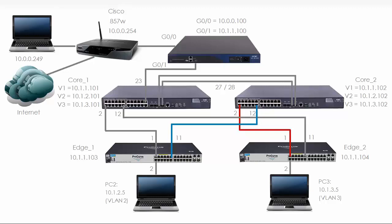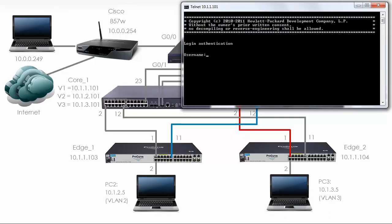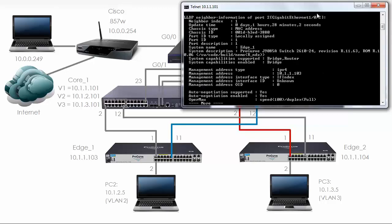Let's use LLDP to double-check our topology. I'm going to telnet to the core A-series switch — core 1 — and run the command 'display LLDP neighbor information'. On port Gigabit 1.0.2, we have a connection to a ProCurve switch on port 1, which is correct. The IP address of that ProCurve switch is 10.1.1.103.